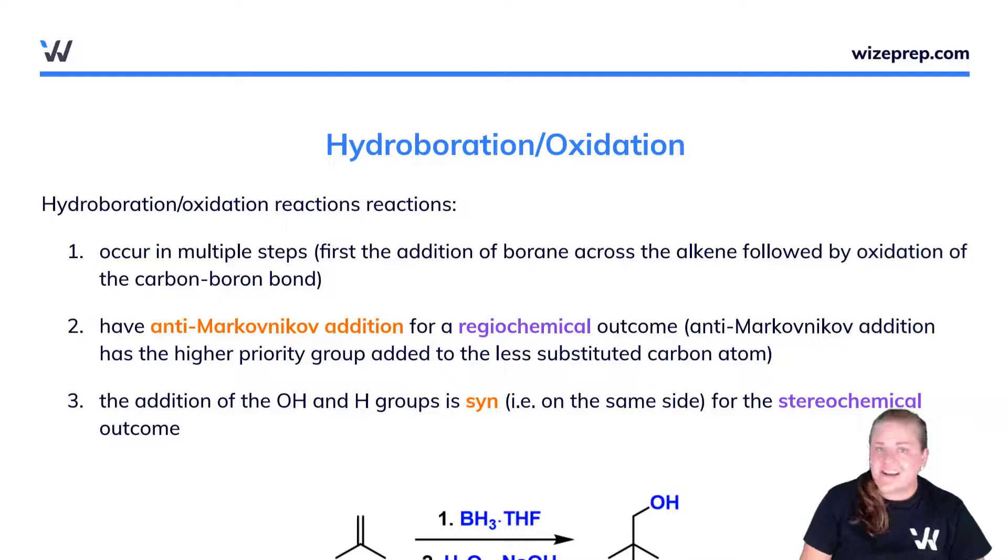The next reaction we're going to see is called hydroboration-oxidation. It occurs in two steps: first, the addition of borane across the alkene, followed by oxidation of the carbon-boron bond. In this reaction, we will have anti-Markovnikov addition for the regiochemical outcome, where the higher priority group is added to the less substituted carbon atom.